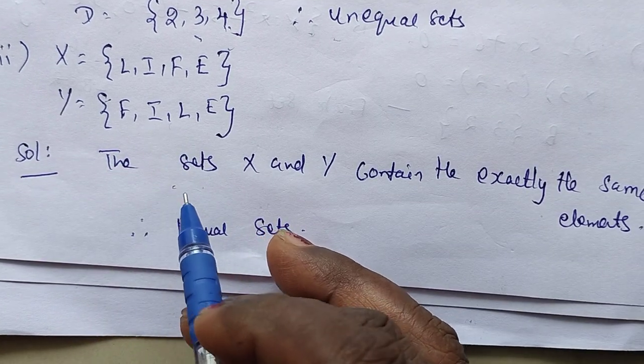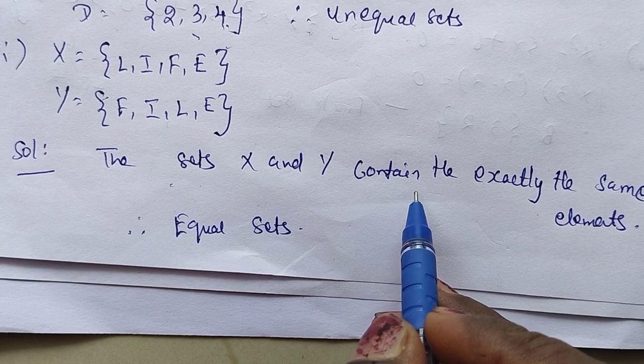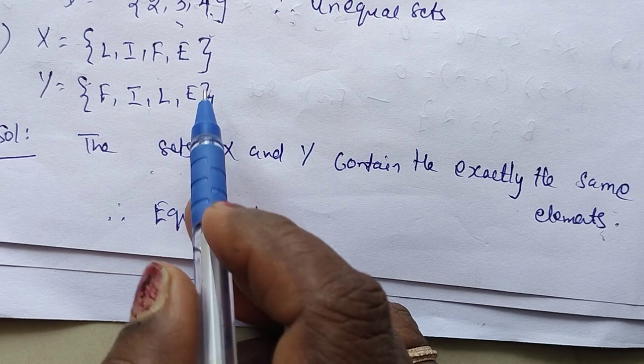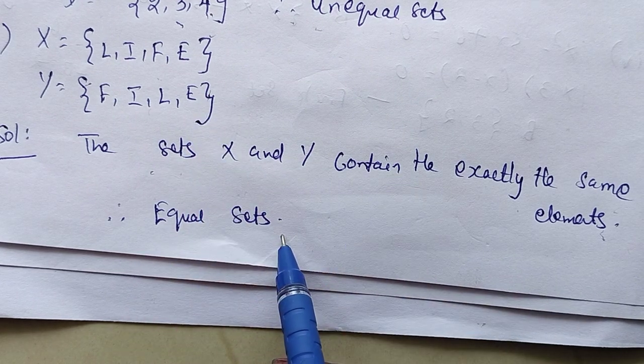So what is the solution? The sets X and Y contain exactly the same number of elements. L, I, F, E, F, I, so four each. Therefore, it's an equal sets.